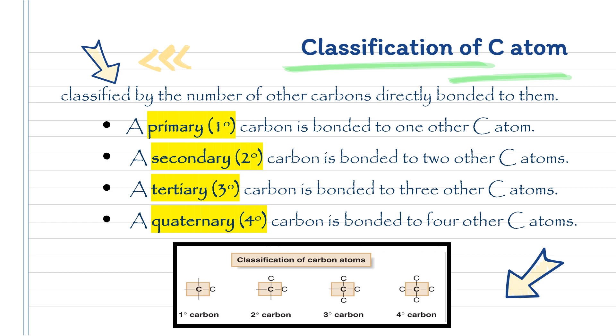Secondary carbon is when the carbon atom is bonded to two other carbon atoms. Tertiary carbon is when it is bonded to three other carbon atoms, and quaternary carbon is when it is bonded to four other carbon atoms. So basically, there are four classes of carbon.